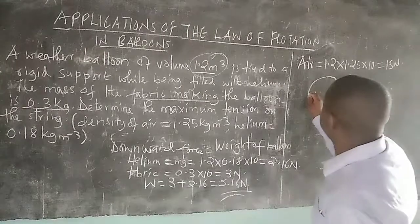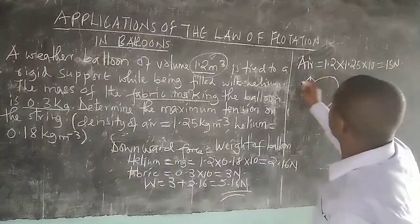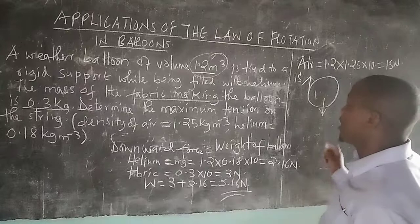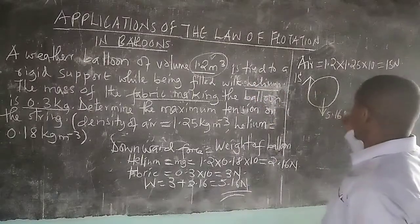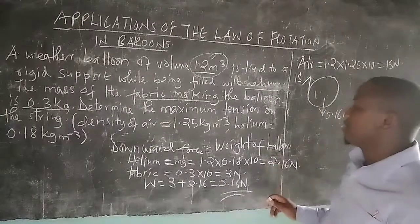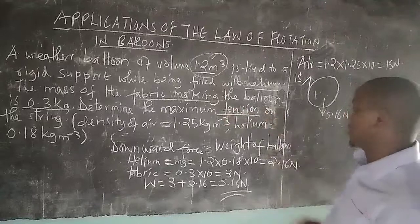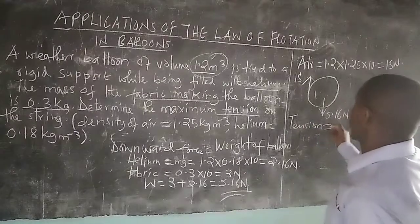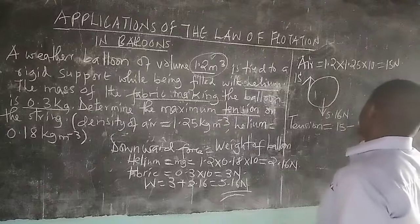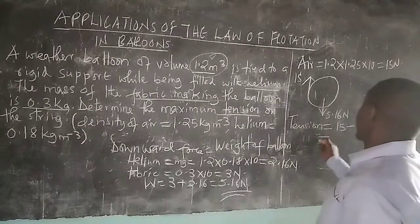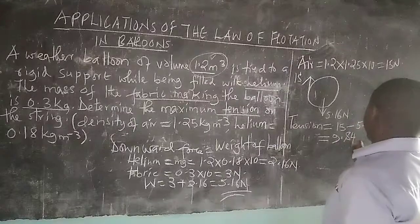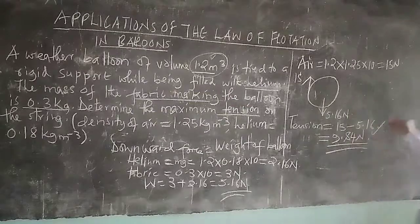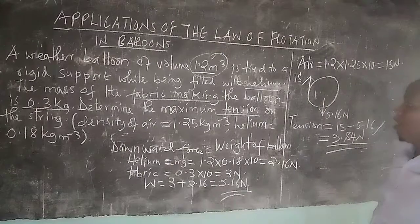In this balloon we have an upthrust of 15 newtons going up, and the weight of the balloon and its helium contents is 5.16 newtons. The resultant force — which is the tension acting on the string — goes upward. Therefore the tension on the string equals the resultant upward force: 15 minus 5.16, which gives us 9.84 newtons acting upward. That is the force causing the upward motion of the balloon.